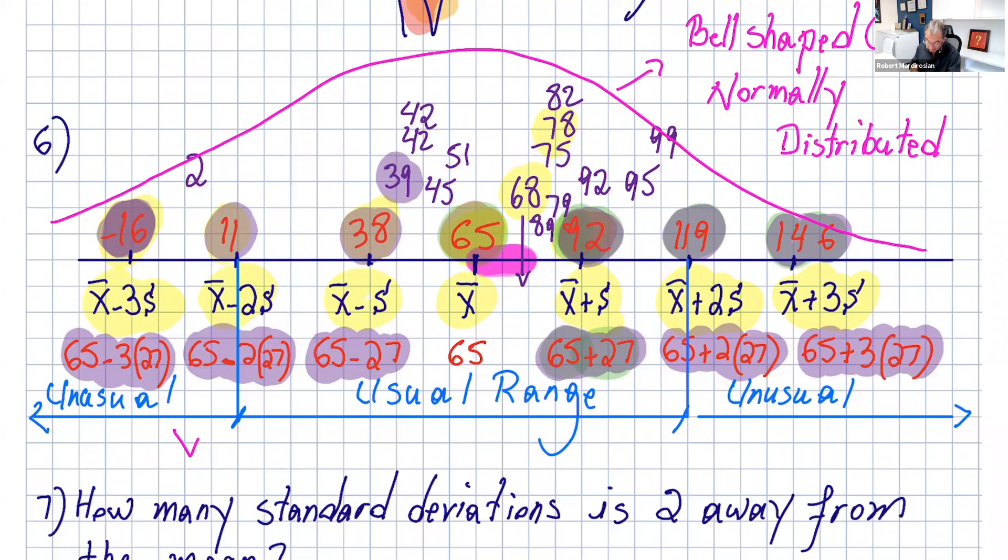The next thing I want you to notice, any number between minus 2s and plus 2s, this range is for usual numbers for this data. Any number after those is unusual. So 2 falls in the unusual range. So 2 is an unusual number for this data.